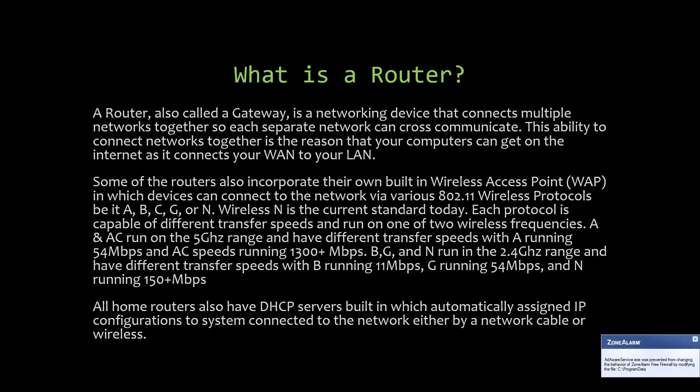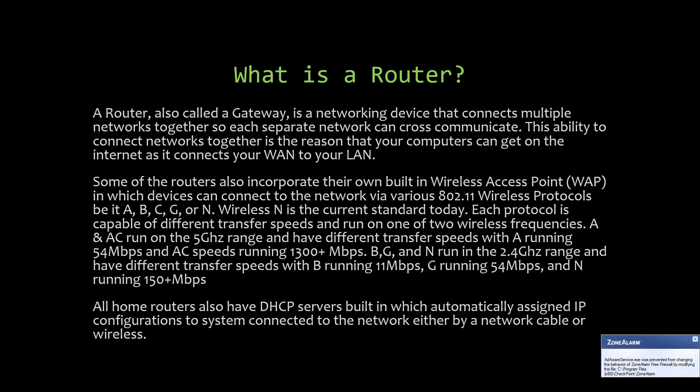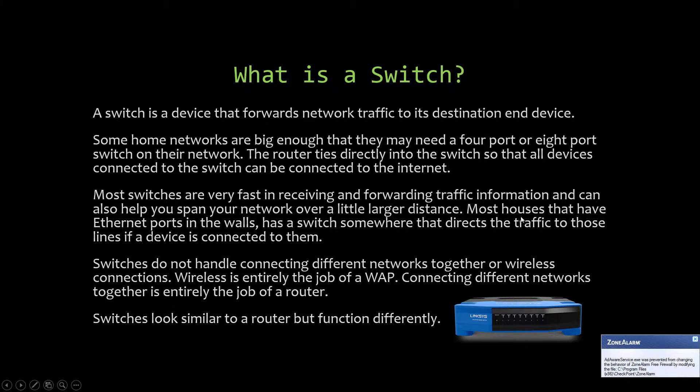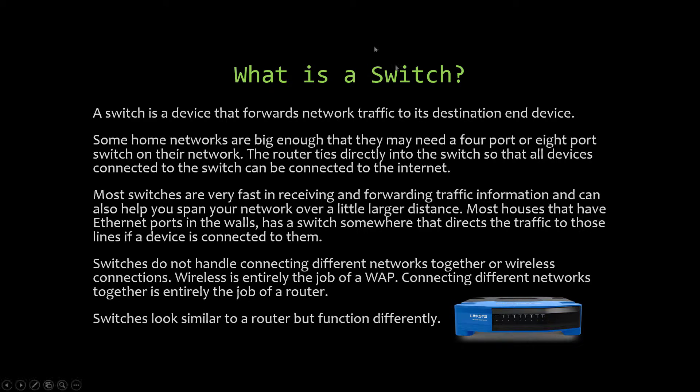A well-configured N router is fully capable of 300+ Mbps. All home routers also have DHCP servers built in, which automatically assign IP configurations to systems connected to the network — either by cable or wirelessly. A switch is the device that forwards network traffic to its destination.